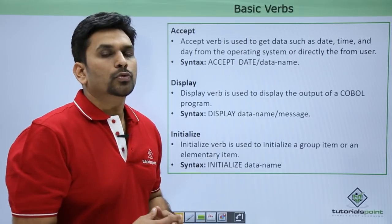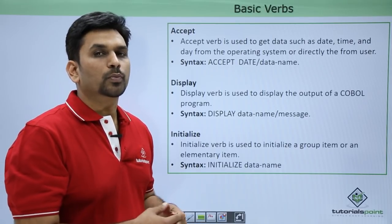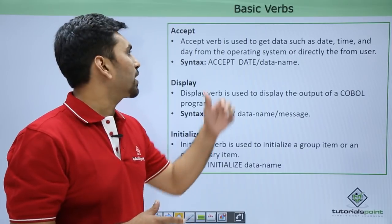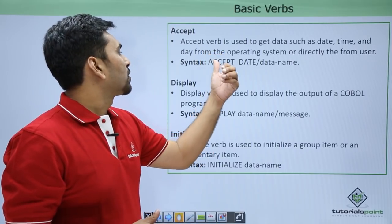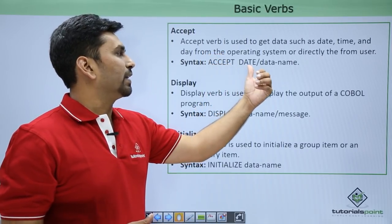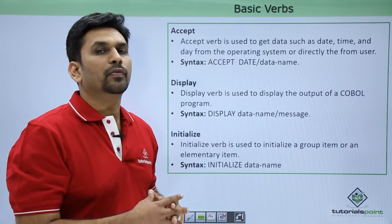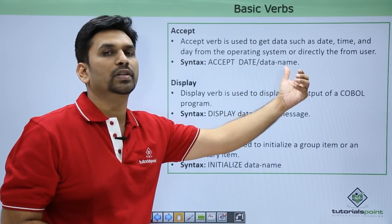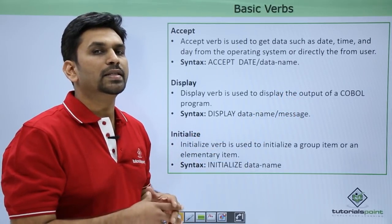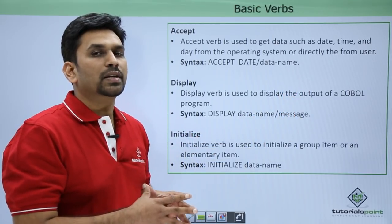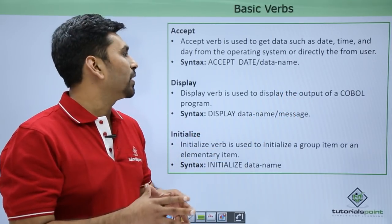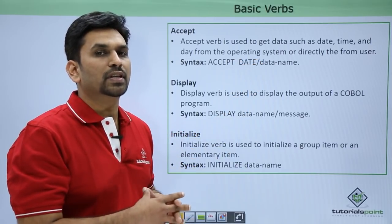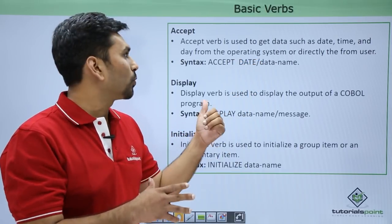Accept verb: suppose you want to accept some data from JCL or from the user, then how you will do it? For that we use the accept verb, and the syntax is 'accept date'. If you accept date it will fetch the system date. If you want to accept a data name — suppose the name of the user — then in JCL the user can pass their name and the COBOL program will accept it.